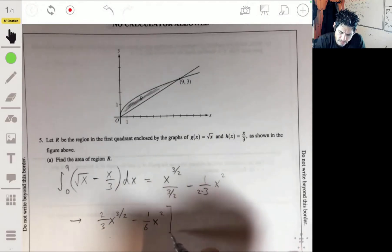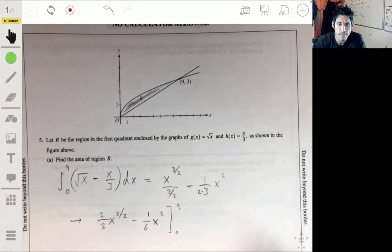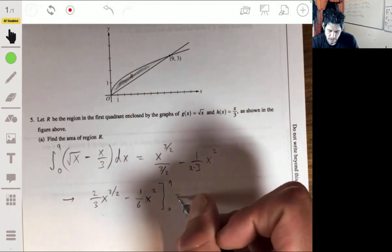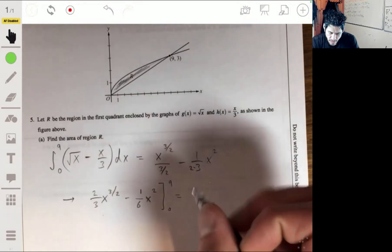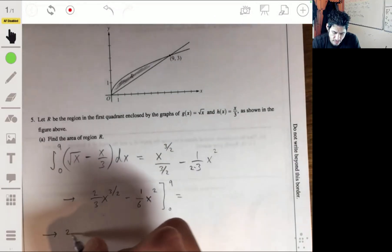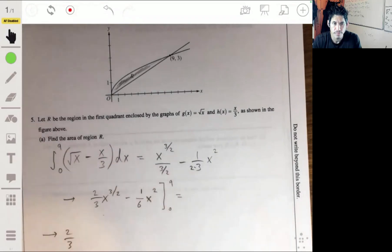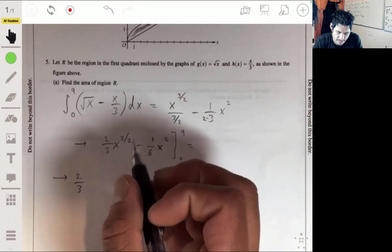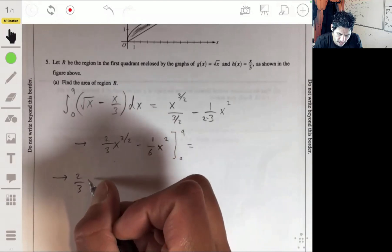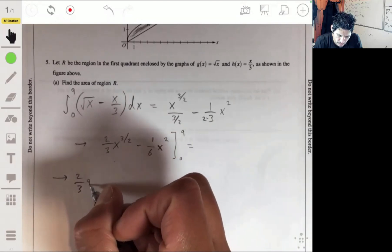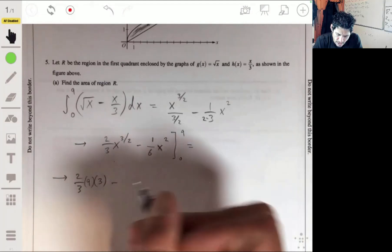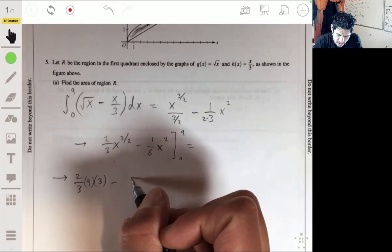And then we're going from 0 to 9. We do the fundamental theorem of calculus, throw the 9 in there. Let's go to the next line so we have good room. 2/3 times 9 to the 3/2, which is 9 times the square root of 9, so it's 9 times 3 or 27, minus 1/6 times 9 squared, so 81 over 6.